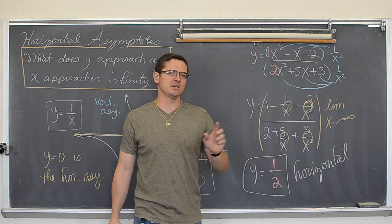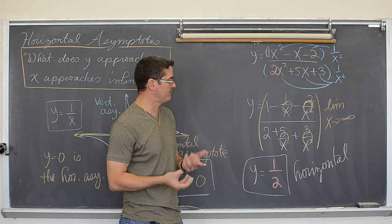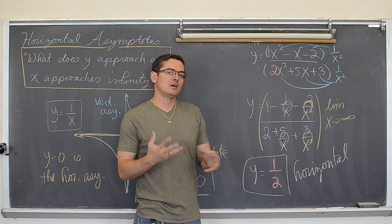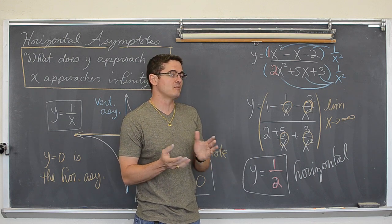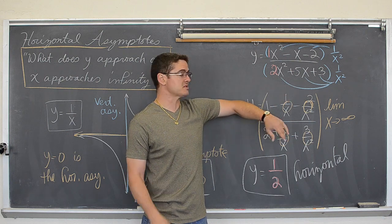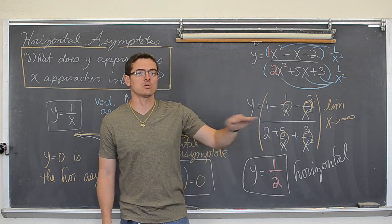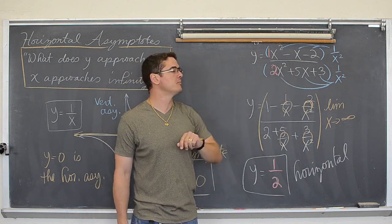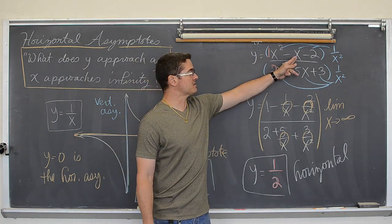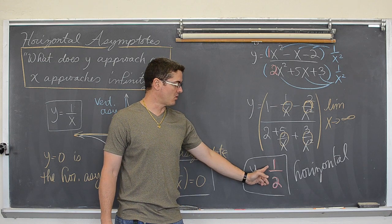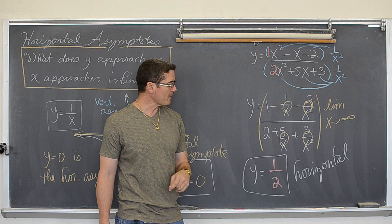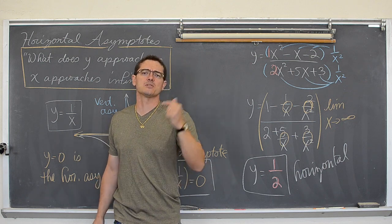I am showing you the algebra and the idea of limits to help explain that. If your teacher is not going to discuss limits at all, I am probably making this seem more complicated than it is. Just remember: if the bottom degree is larger, the horizontal asymptote is y equals zero; if the top and bottom degrees are the same, the horizontal asymptote is y equals the ratio of the leading coefficients.